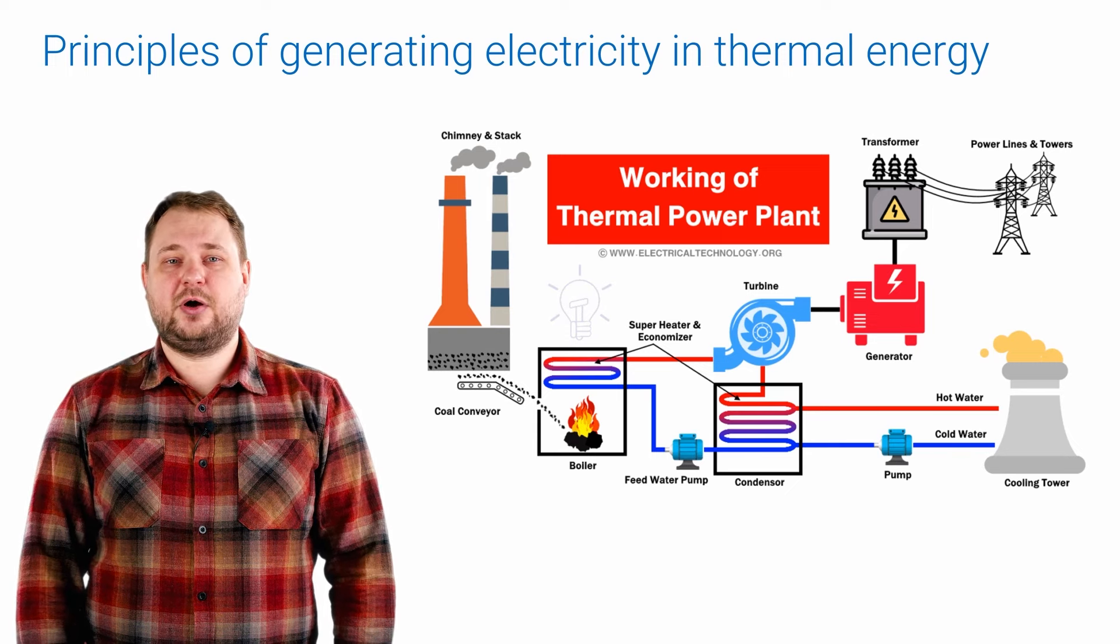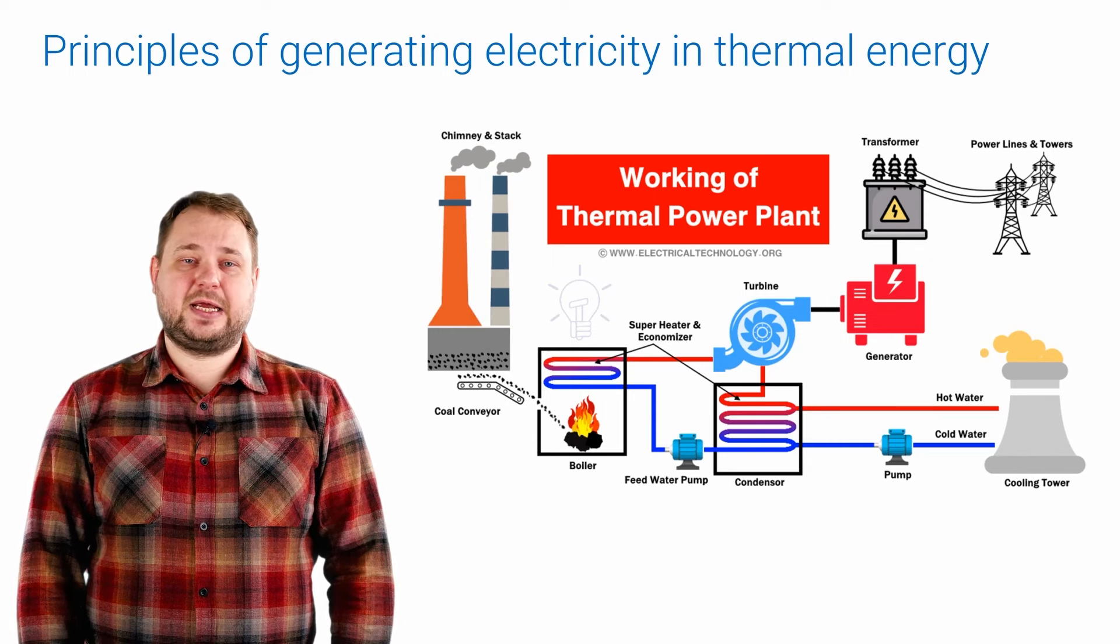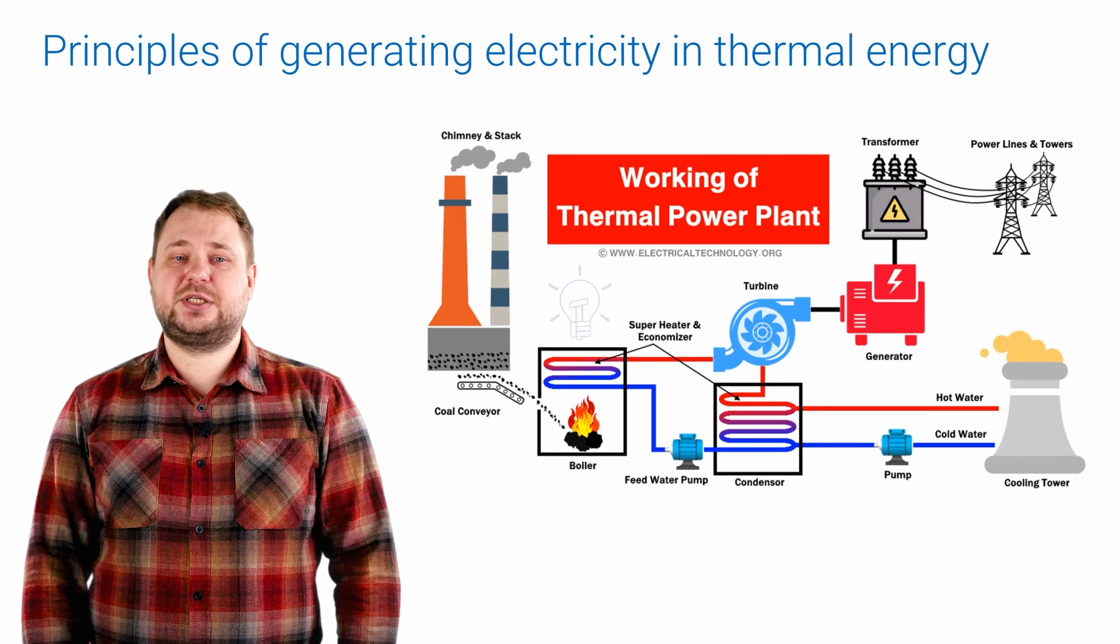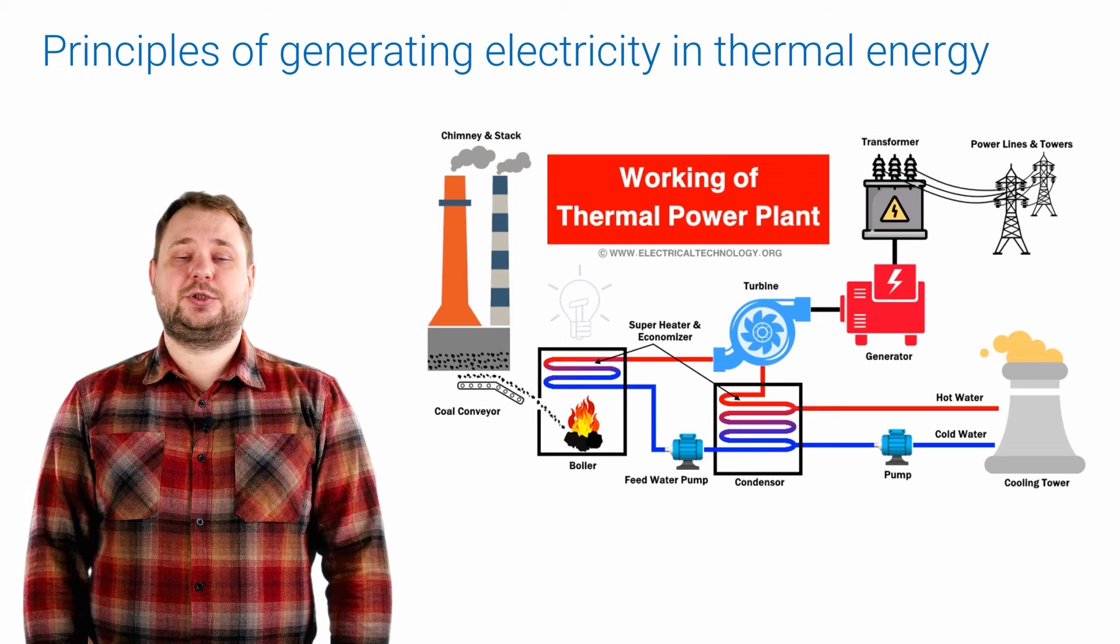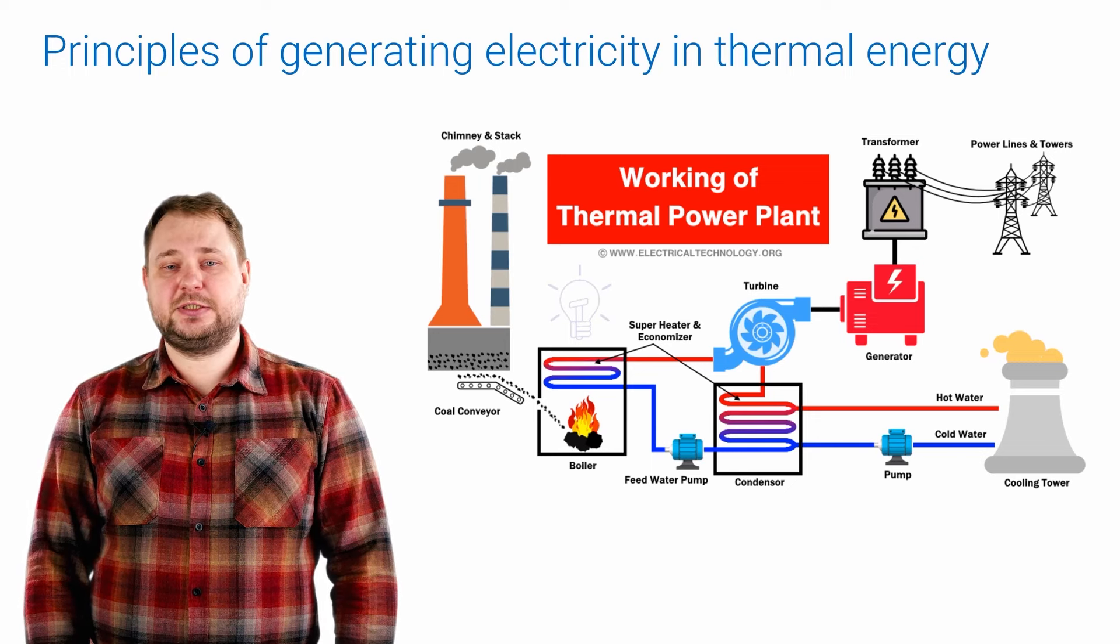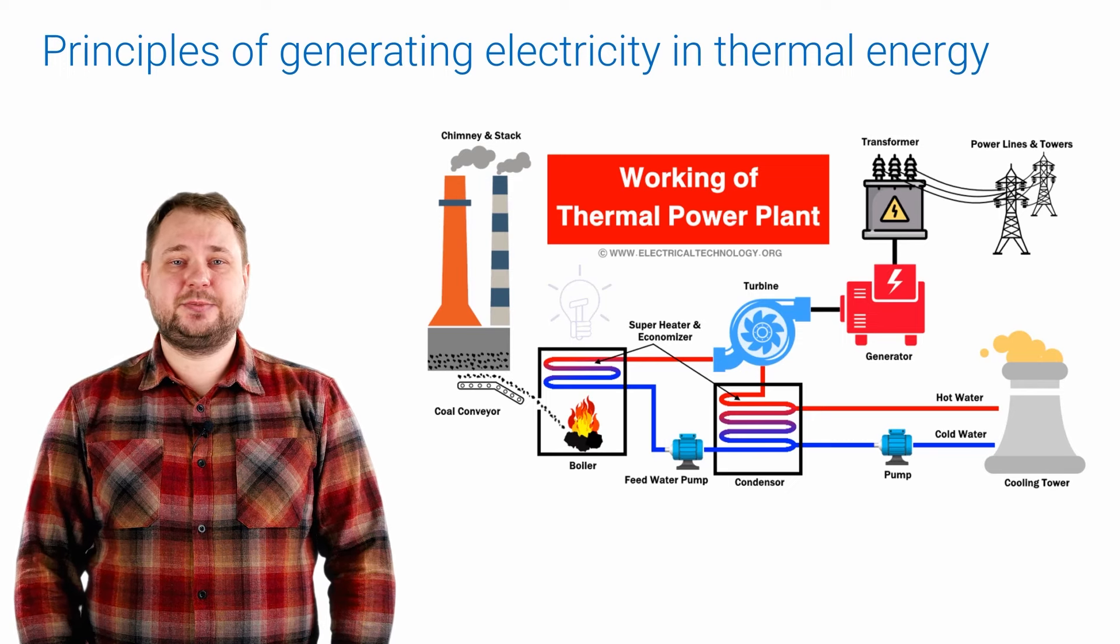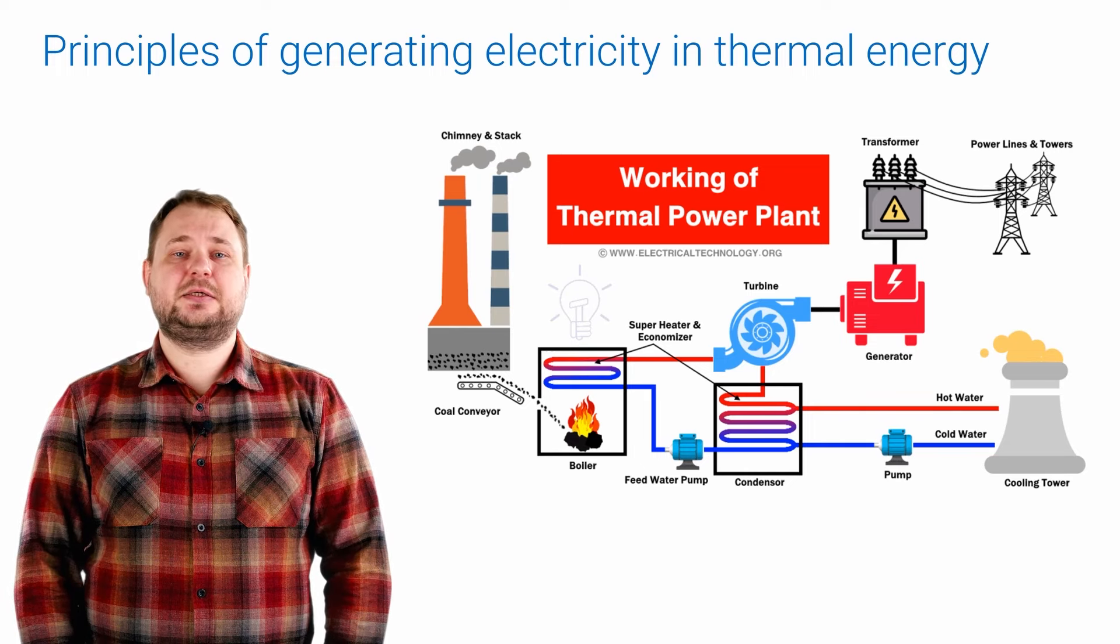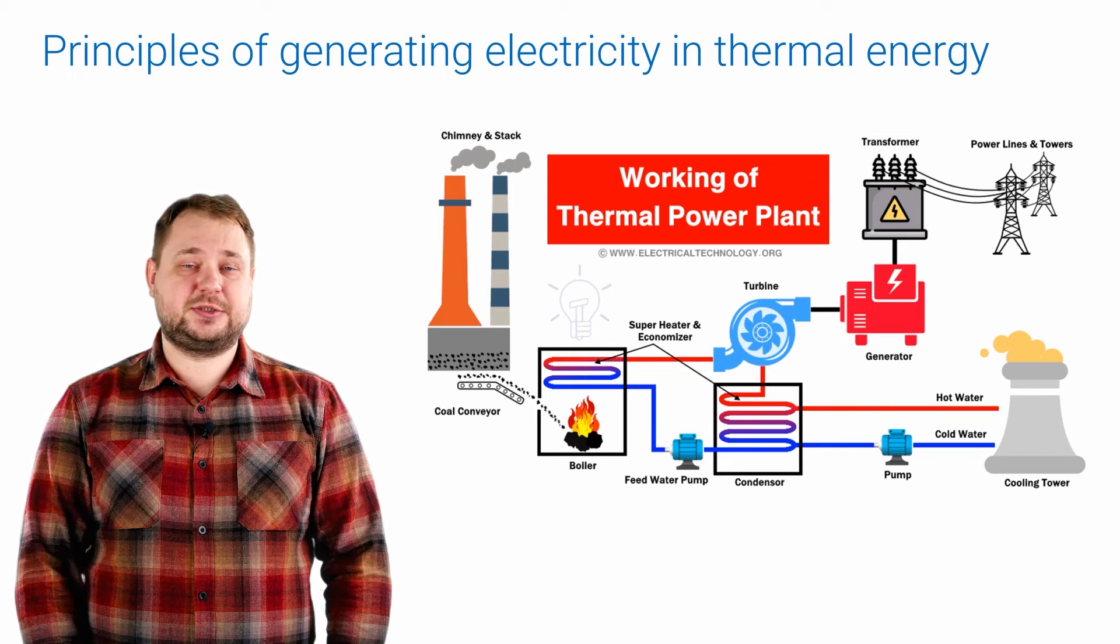The basic principle of operation of thermal power plants is to use the heat generated by combustion of hydrocarbon fuels such as coal, oil or natural gas to heat water and convert it into steam. This steam is then expanded in steam turbines and rotates them. The rotation of the turbine is transmitted to electric generators then produce electricity.